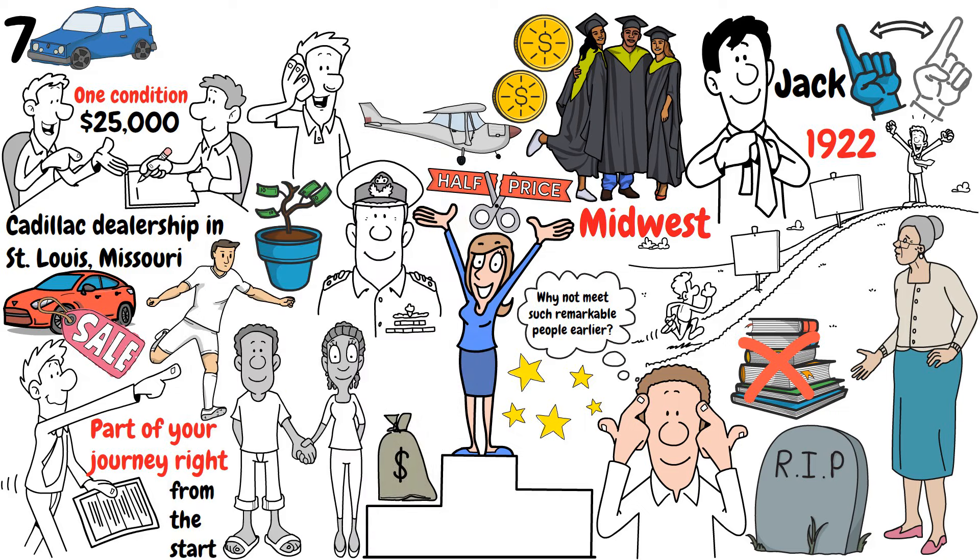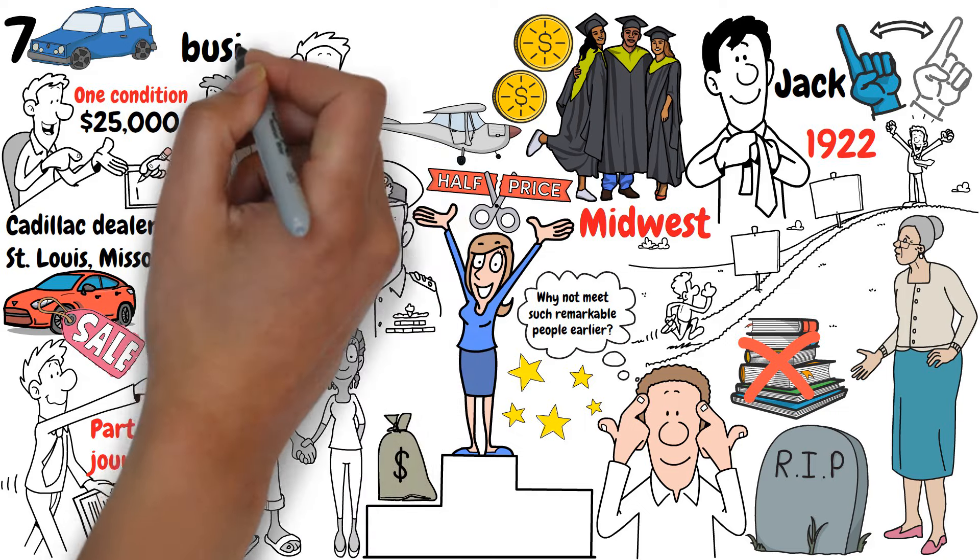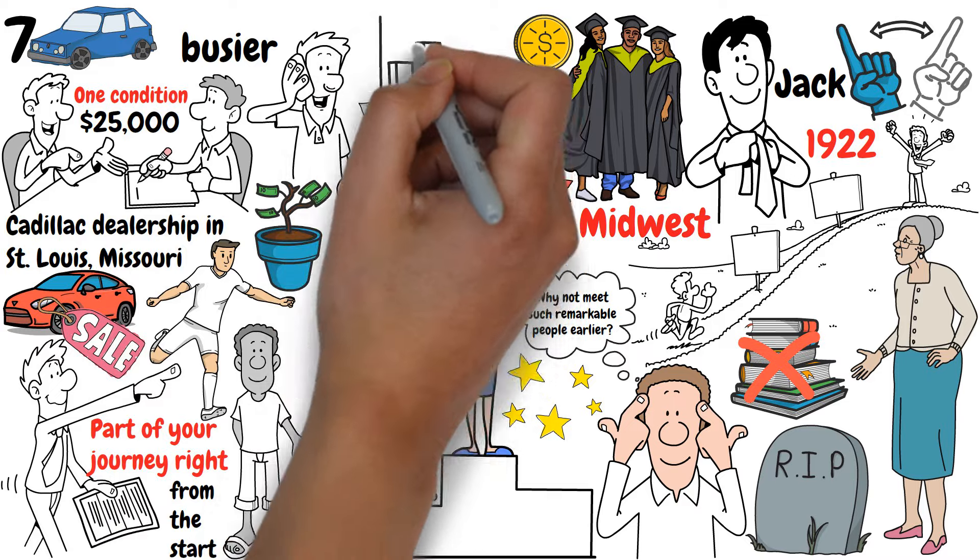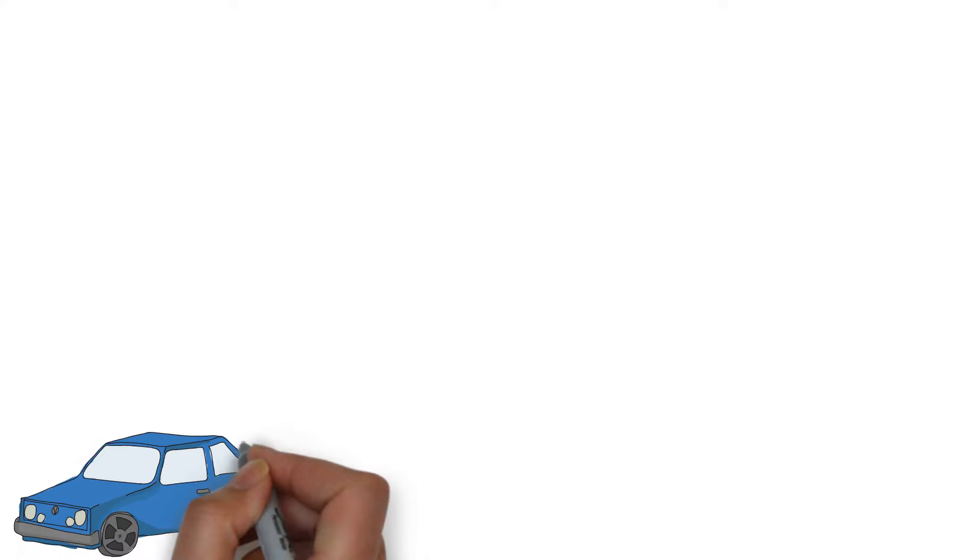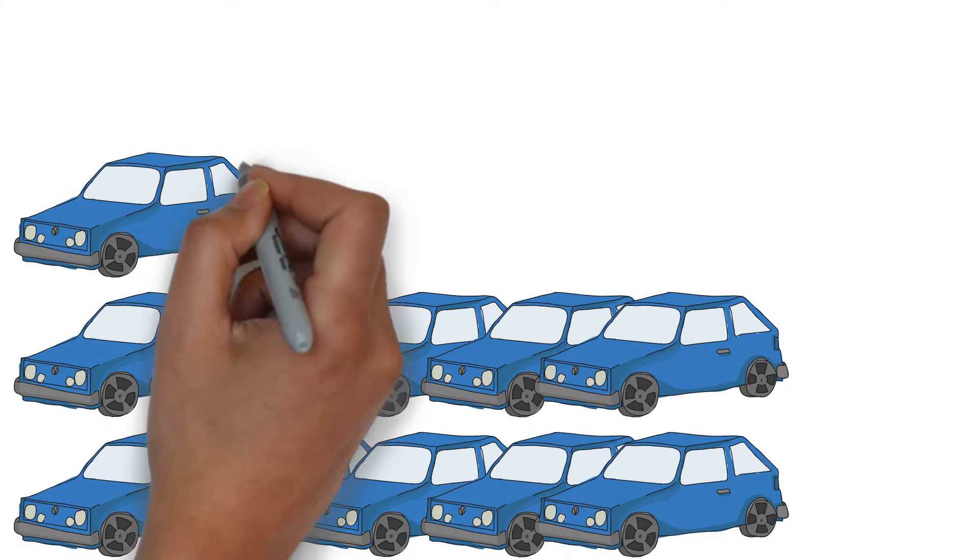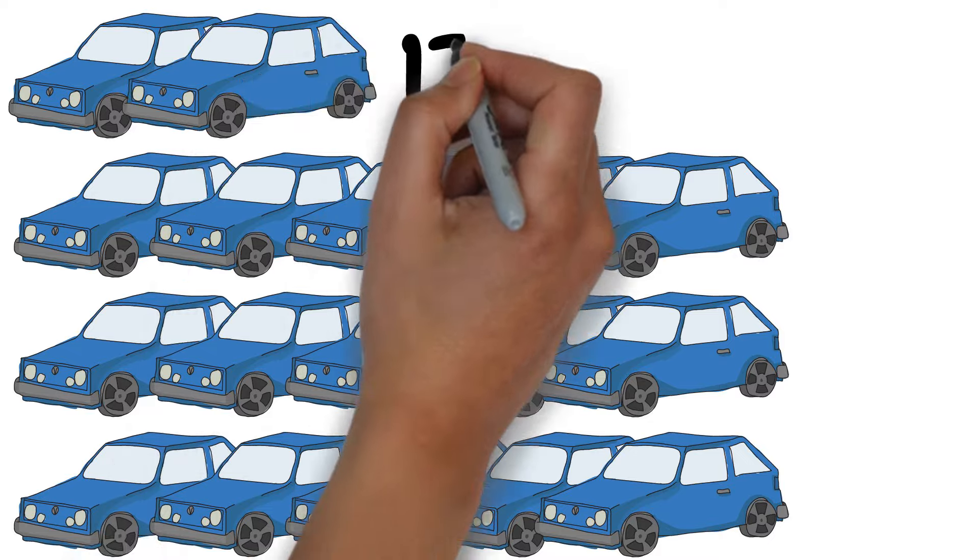With just seven cars, Jack started his leasing business. It was tough at first. He would let the phone ring a few times before picking up to make it look like he was busier than he really was, but this first venture was just moderately successful. Yet, Jack didn't give up.